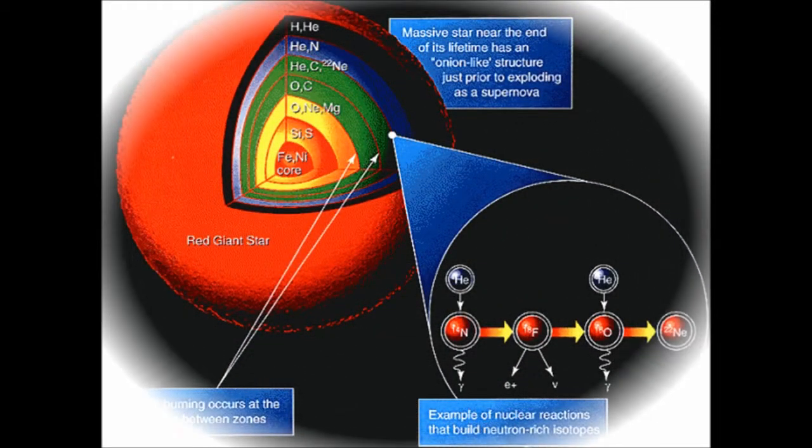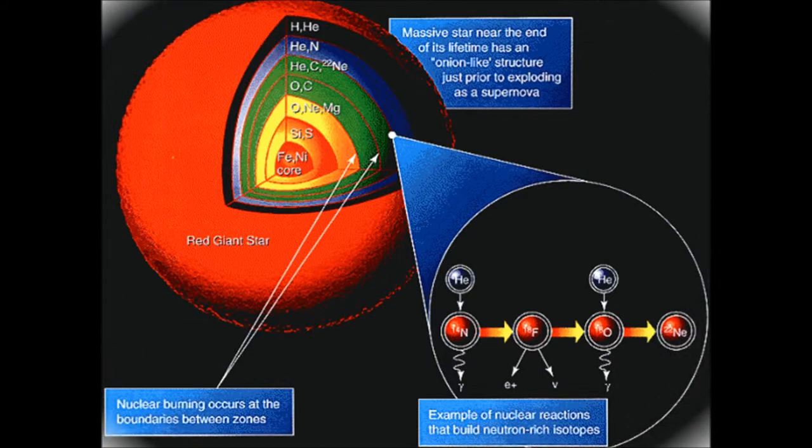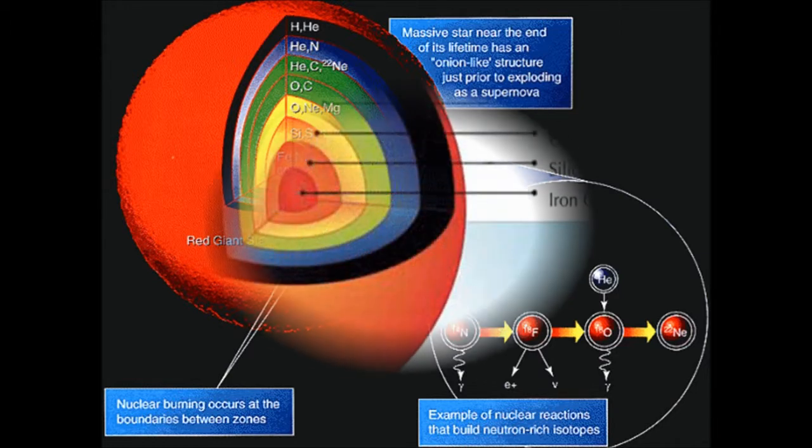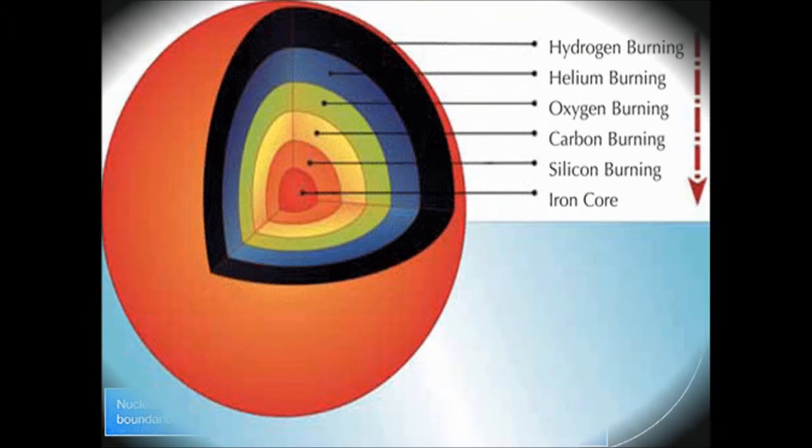This enhanced stability of iron explains why some of the heavier nuclei in the iron group are more abundant than many lighter nuclei. Nuclei tend to accumulate near iron as stars evolve.